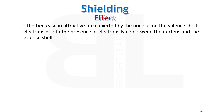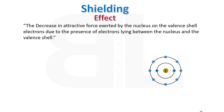In order to understand the shielding effect, we must consider the general diagram of an atom. There are two types of forces in an atom: a positive force due to the presence of protons in the nucleus, and a negative force due to electrons orbiting the nucleus in particular pathways called energy levels or shells.